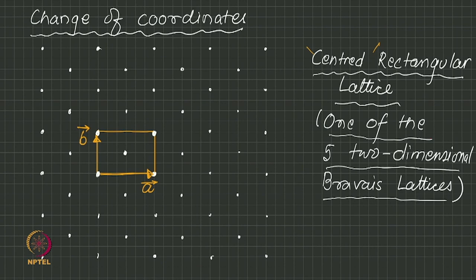It is not a primitive unit cell of this lattice, and correspondingly the basis vectors a and b are not primitive basis vectors. This is nice because it shows the symmetry of the lattice — that it has rectangular symmetry, meaning the two vectors are perpendicular to each other. But sometimes we do need a primitive unit cell, because a primitive cell has the advantage that there is only one lattice point per cell, at the corners only and not inside. So suppose now we select a primitive unit cell for this lattice.